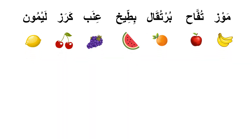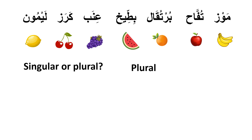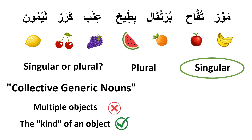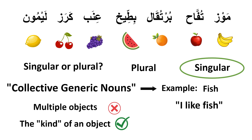Here we have all the fruit names we've learned today: موز، تفاح، برتقال، بطيخ, and so on. But do you know whether these nouns are singular or plural? Well, all these nouns describe a plural, but grammatically they are singular. It is something called collective generic nouns. Collective generic nouns don't describe multiple objects — they describe the kind of an object.